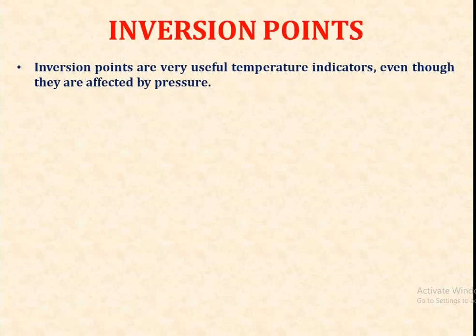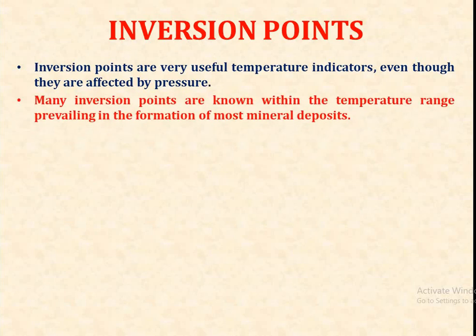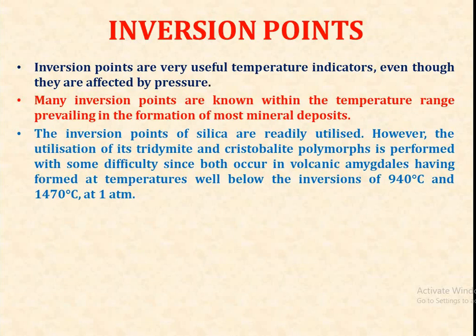The next method is the inversion point. Inversion points are very useful temperature indicators even though they are affected by pressure. Many inversion points are known within the temperature range relevant to the formation of most mineral deposits. The inversion points of silica are readily utilized; however, the utilization of its tridymite and cristobalite polymorphs is performed with some difficulty, since both occur in volcanic amygdules having formed at temperatures well below the inversion points of 940 degrees Celsius and 1470 degrees Celsius at one atmospheric pressure.